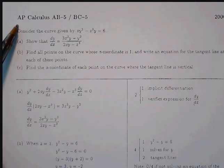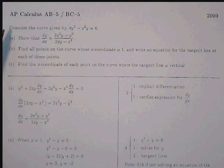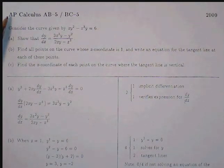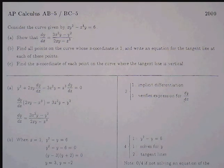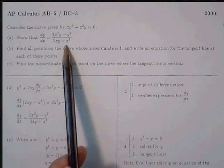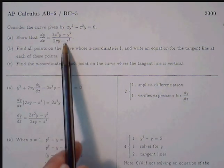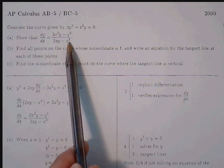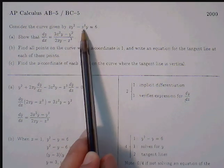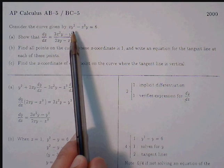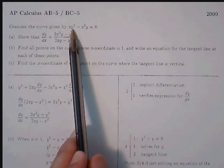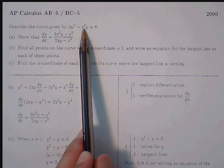This is the practice problem dealing with implicit differentiation from the year 2000 AP FRQ from College Board. The problem says: consider the curve given by xy³ minus x³y equals 6. We need to show that the derivative equation is what was provided, meaning we have to show the work that gets us from the equation to the derivative. Notice the x's and y's are not nicely separated — they're mixed together on one side — so we have to use implicit differentiation.